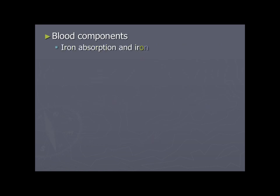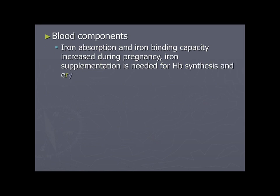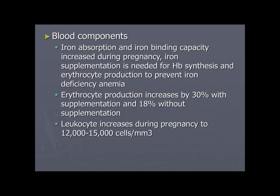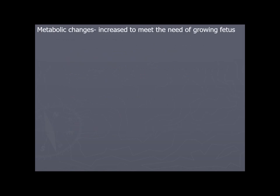Iron absorption and iron-binding capacity increase during pregnancy. Iron supplementation is needed for hemoglobin synthesis and erythrocyte production to prevent iron-deficiency anemia. Erythrocyte production increases by 30% with supplementation and only 18% without. Leukocyte count increases during pregnancy to 12,000–15,000 cells per cubic millimeter.